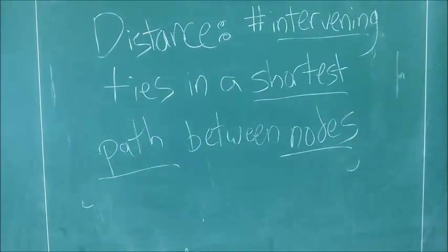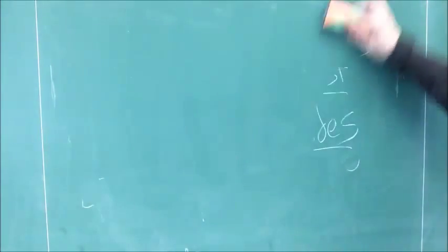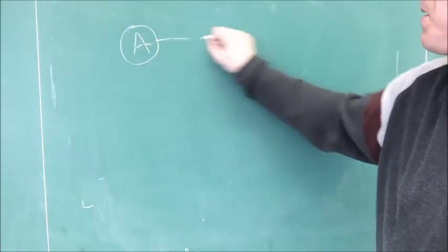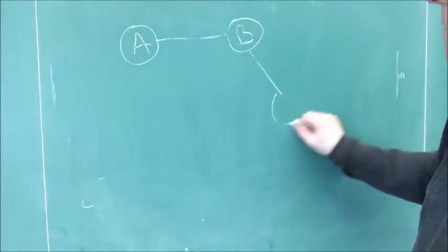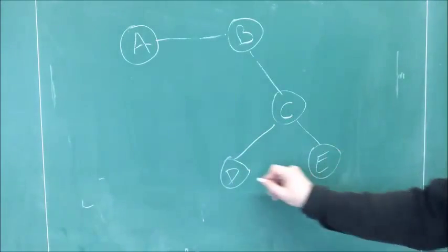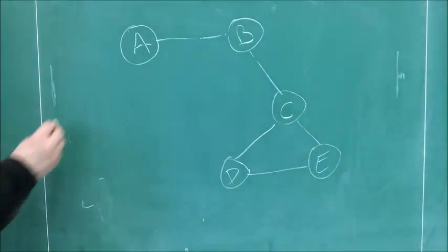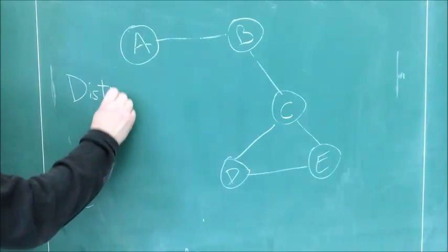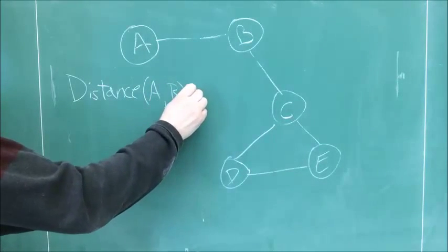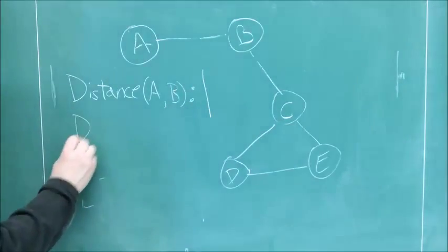Let's look at an example in two networks. The first network will be an undirected network, a network without direction in its ties. In that network, we can go either direction, from A to B, back from B to A, and we can look at a very simple network of five nodes. If we want to consider what the distance is between A and B, the answer is the number of intervening ties, the number of ties that lie between them, in the shortest possible path. You can imagine yourself actually walking from A to B, and that is a distance of one, because there's one intervening tie.